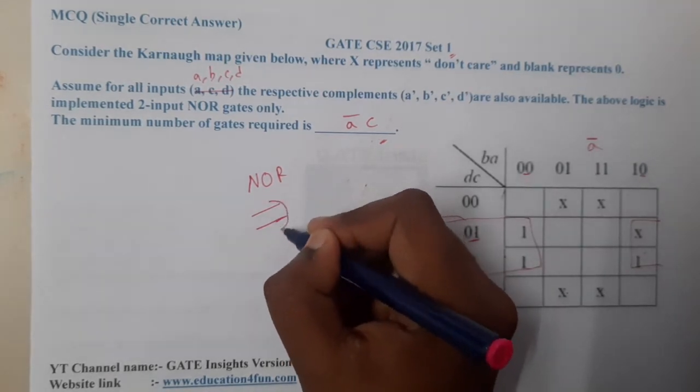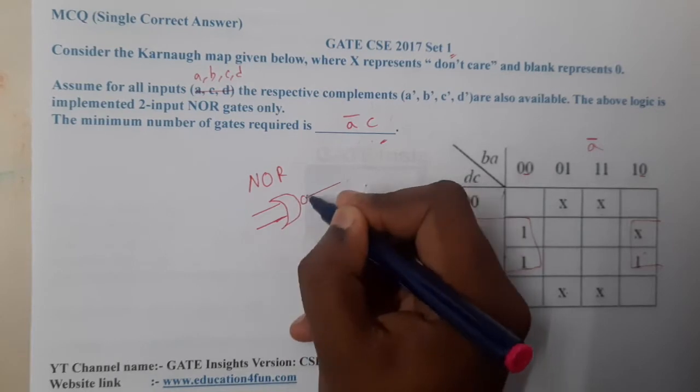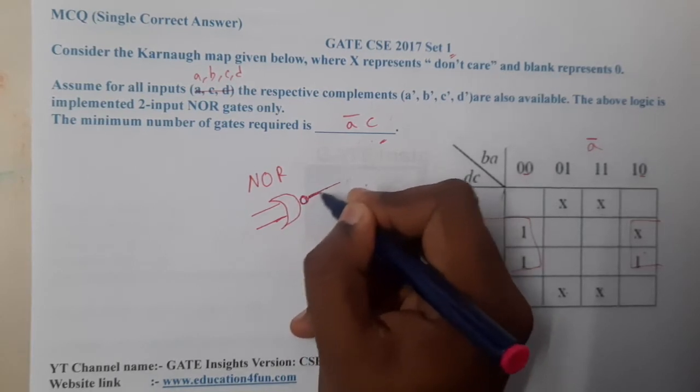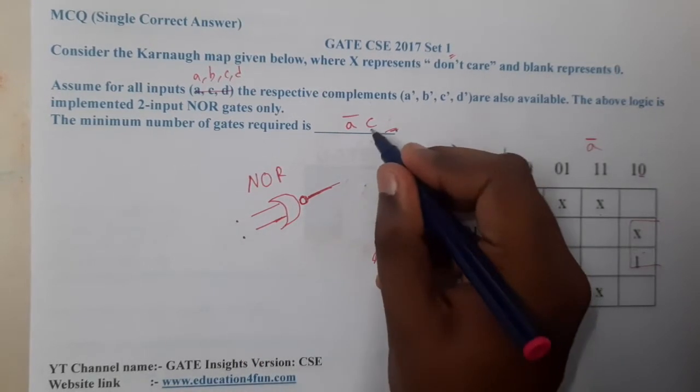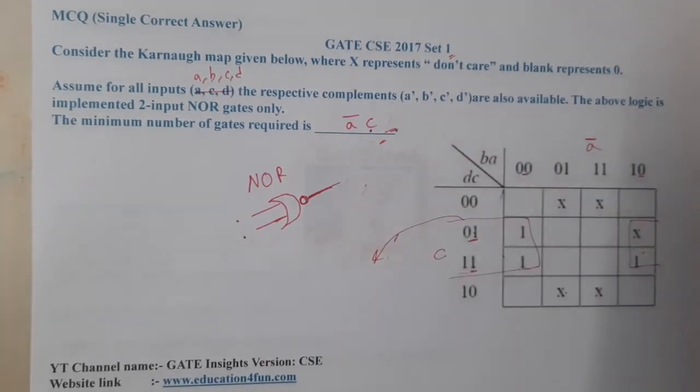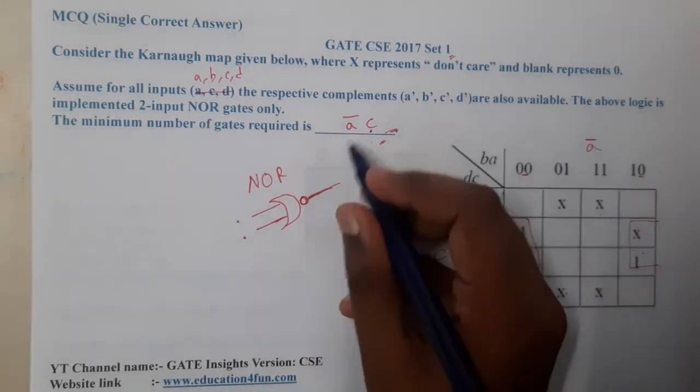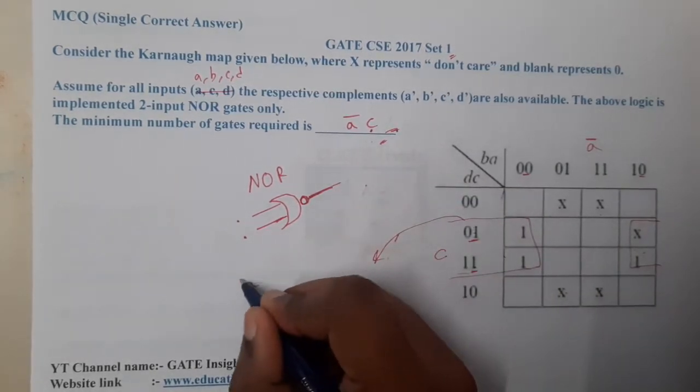So NOR means it should work in this way. Complement. So we just need to convert this equation so that we give some input here, some input here, and we will get this result. A simple trick is: apply double complement for it.